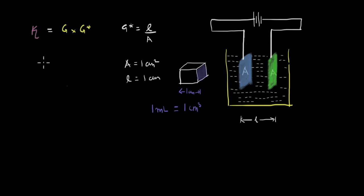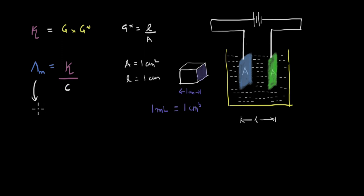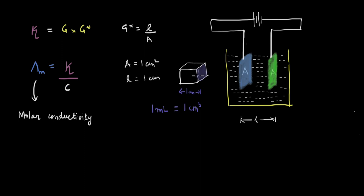It's useful to rethink conductivity on a per-mole basis. We define a new term called molar conductivity, denoted by uppercase lambda (Λm), as kappa divided by molar concentration (molarity) c. The reason we can't just use kappa directly for solutions is that conductivity depends on how many ions are present, which in turn depends on the concentration of the solute. So we use molarity to account for this.